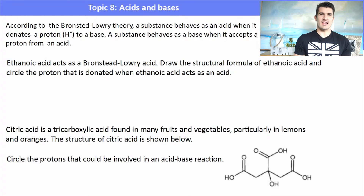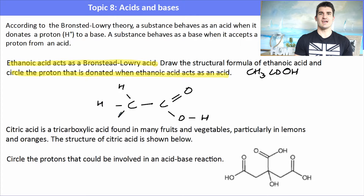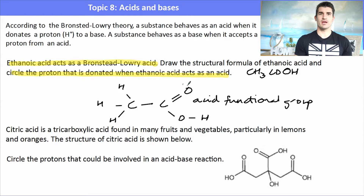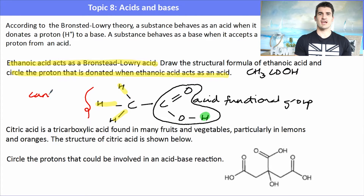According to Brønsted-Lowry theory, acids donate a proton and bases receive a proton. Ethanoic acid, CH₃COOH, acts as a Brønsted-Lowry acid. It has a carboxyl functional group (COOH) and a methyl section. The carboxyl group is the part able to donate a proton — the hydrogens on the CH₃ carbon cannot, so only the hydrogen attached to the carboxyl group is donated in an acid-base reaction.